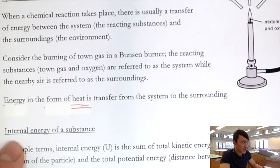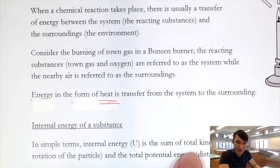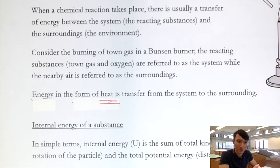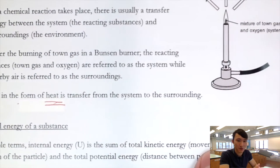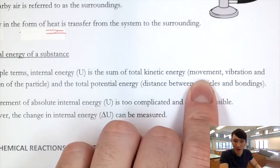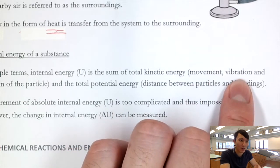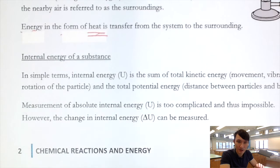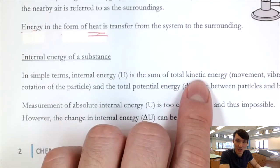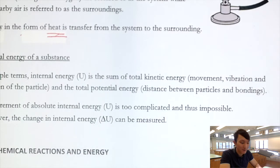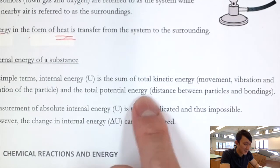Internal energy basically means the total kinetic energy of reactant molecules and the total potential energy of a molecule. For a molecule, kinetic energy involves not only translational movement, but also vibration — all bonds are vibrating all the time — and rotation. All of these involve movement and therefore contribute to the total kinetic energy. Potential energy refers to the chemical energy stored in a chemical bond.